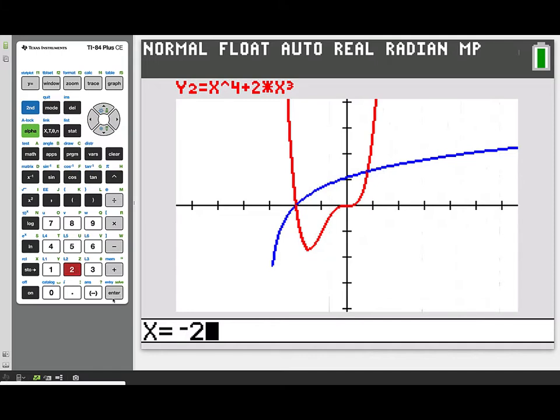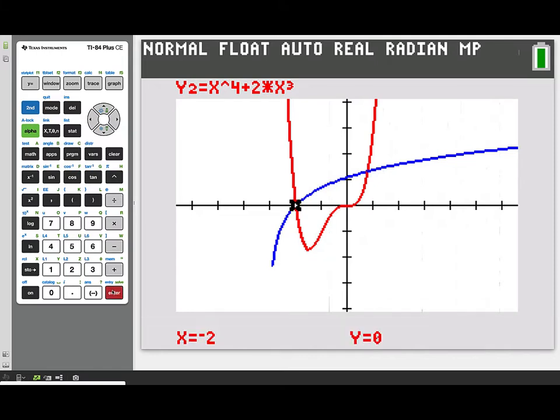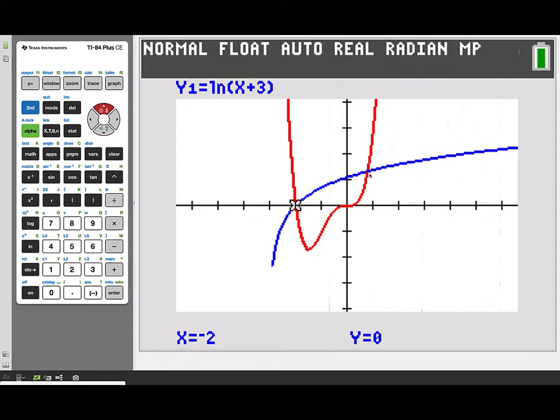We're given one of the intersection points, and this is the more obvious one, is right at negative 2. That's a common zero for both functions. We can see another intersection point that's labeled simply b in the problem, but we're going to want to find the value of that.